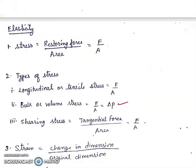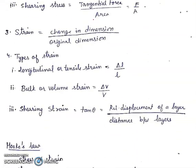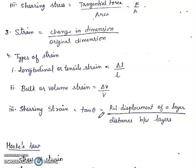Strain is change in dimension upon original dimension. There are three types of strain: longitudinal or tensile strain is change in length upon original length; bulk or volume strain is change in volume upon original volume; and shearing strain is equal to tan theta, which equals relative displacement of a layer upon distance between the layers.